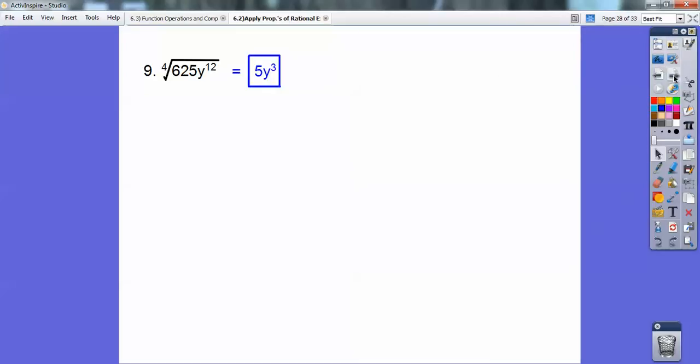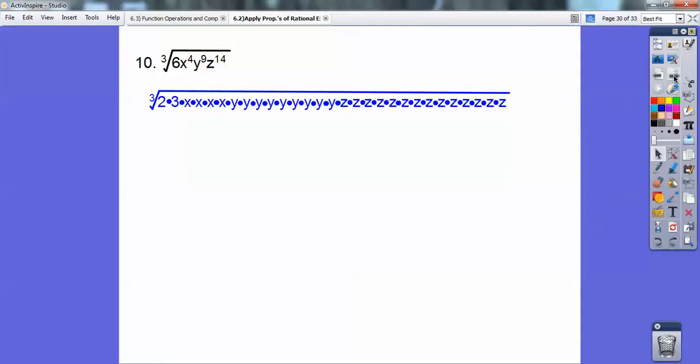I'll show you what I mean on this next one. Is it this one? Yeah, this one right here. Okay, I'm going to spread all these out. 6 is 2 times 3, x to the 4th is 4 x's, y to the 9th is 9 y's, and z to the 14th, there they are. Look at that, baby. Isn't that a beauty?